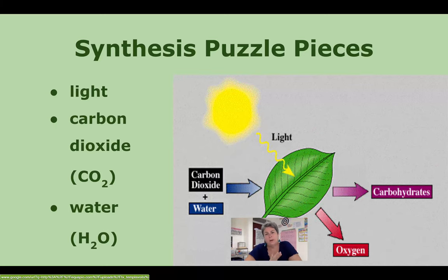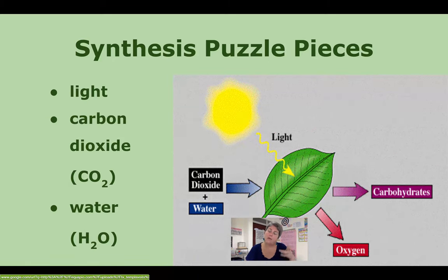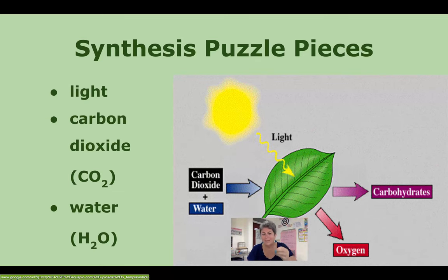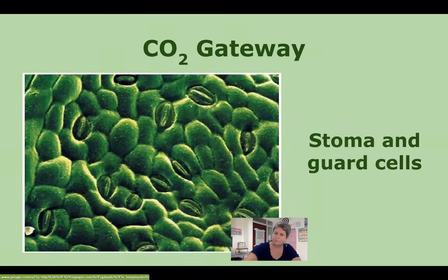Now let's look at the synthesis part of photosynthesis. If synthesis is taking individual puzzle pieces and putting them together to create a new whole, we have to look at what those puzzle pieces are and how they are obtained by the plant or producer. We know about light — light is absorbed by the chlorophyll. The next important ingredients are carbon dioxide (CO2) and water. We're going to look at how those get into vascular plants.